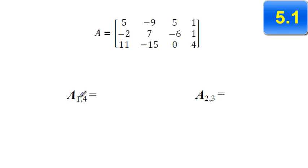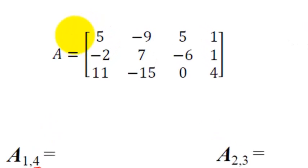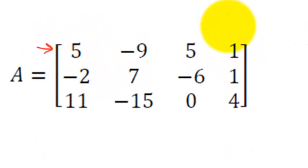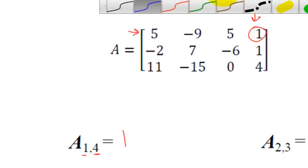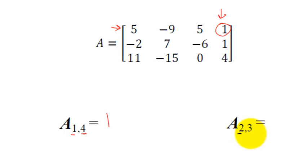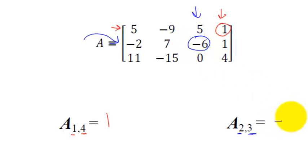When we say element 1 comma 4, this is talking about an actual element inside the matrix. If this is matrix A, element 1 comma 4 means row 1 and column 4. So we go to row 1, then column 4, and where they match up is the number 1. For the next problem, we're saying row 2 — rows are always first, columns are second — so row 2 and column 3 match up at negative 6.